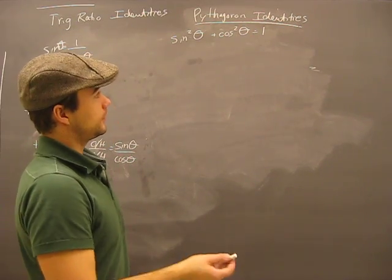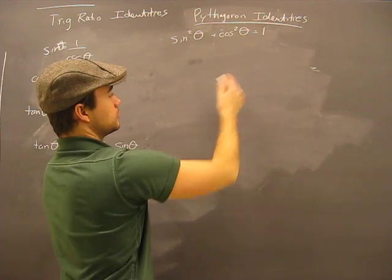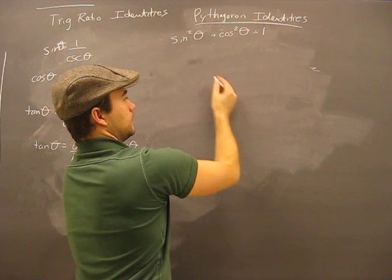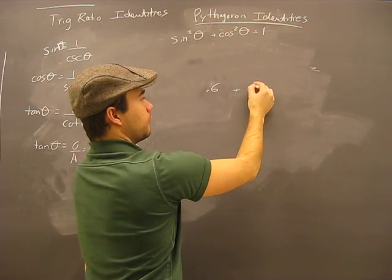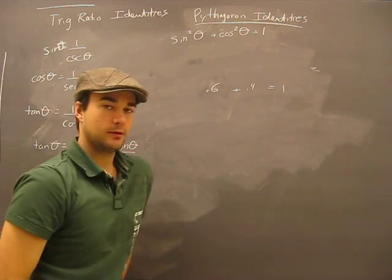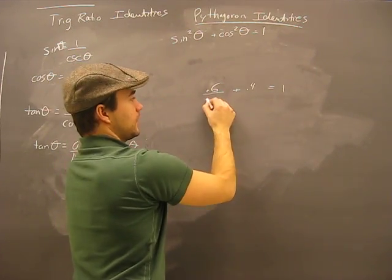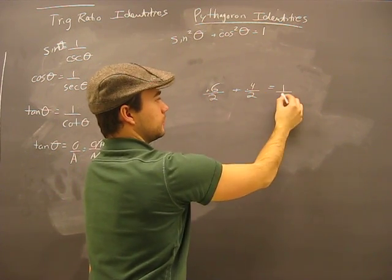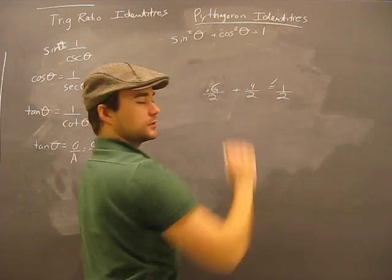We're going to have a little more fun with these trig identities here. Let's check this out. I have something plus something equals 1. For example, if I have 0.6 plus 0.4 equals 1, I can also say 0.6 divided by 2 plus 0.4 divided by 2 will equal 1 divided by 2. We divide everything by the same number and the equal sign stays true.